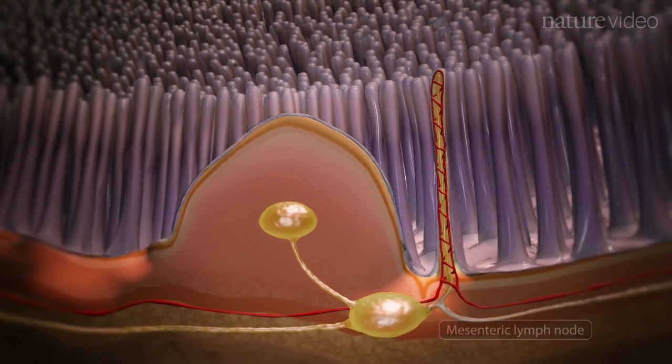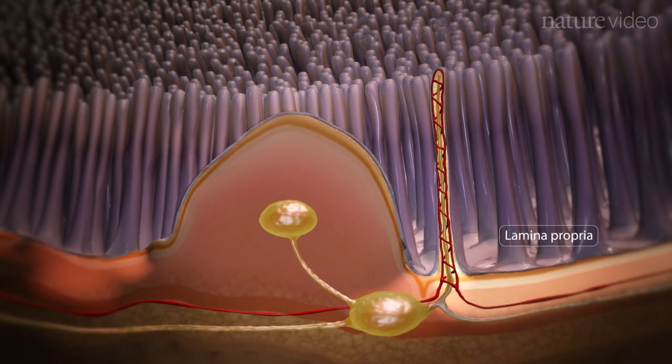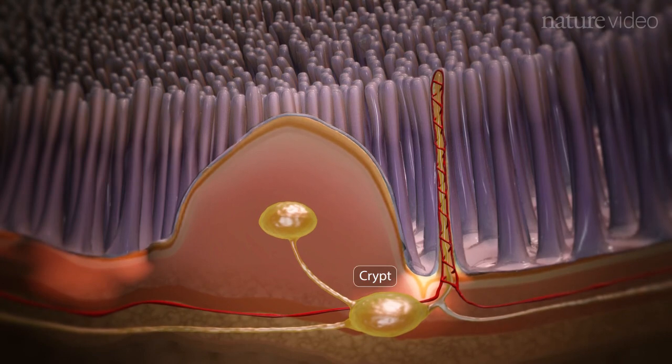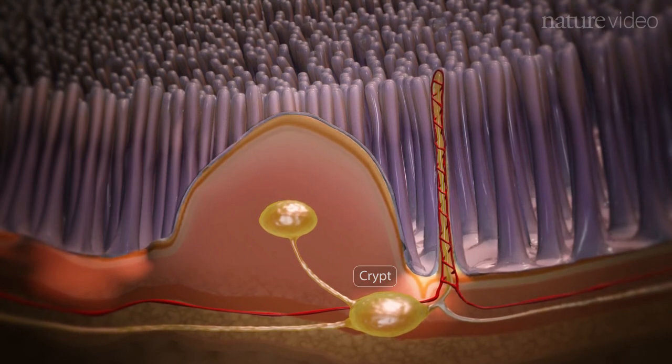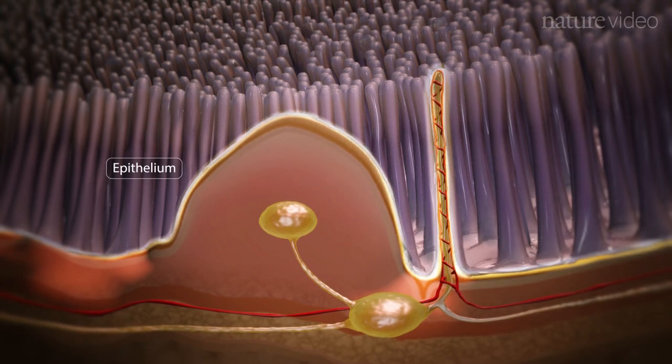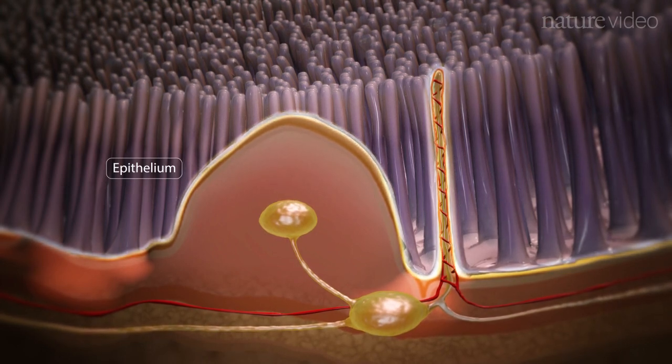Within the villi is a network of loose connective tissue called the lamina propria, and at the base of the villi are the crypts, which host stem cells that replenish the epithelium. Finally, the epithelium, together with its thick overlying mucus, forms an important barrier against microbial invasion.